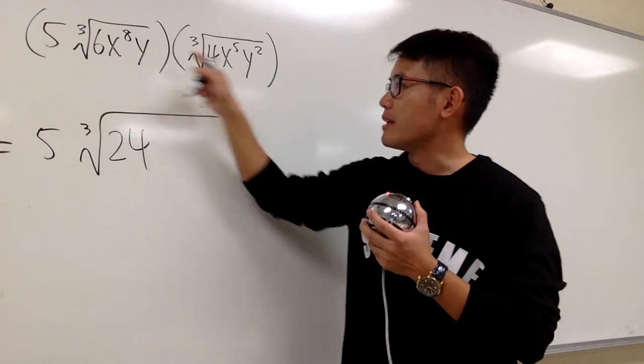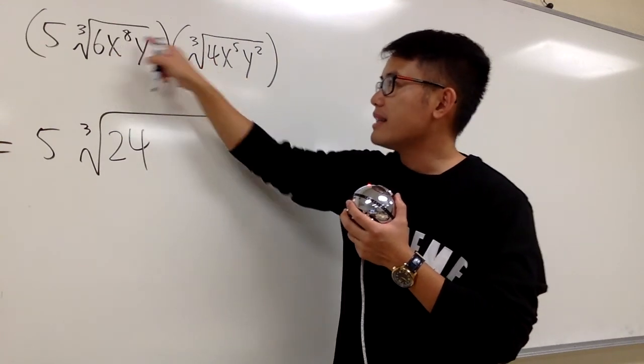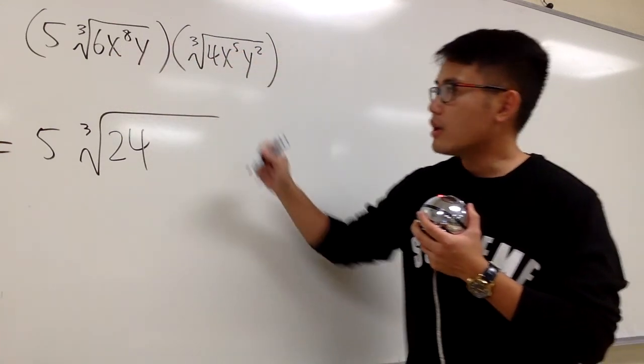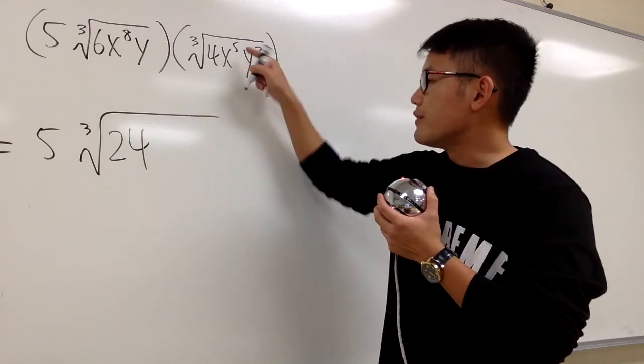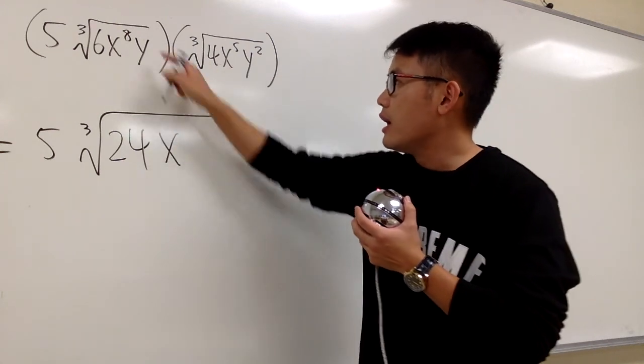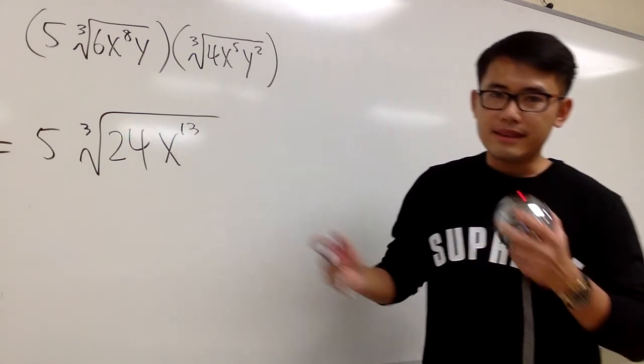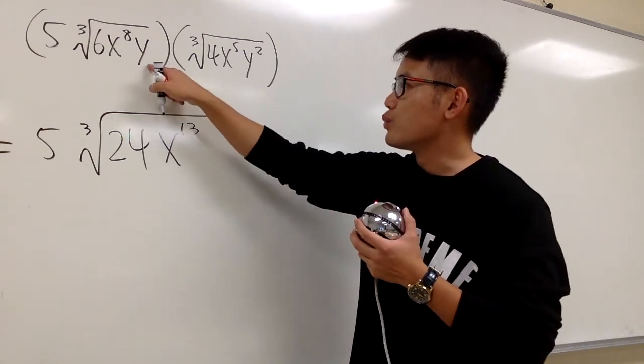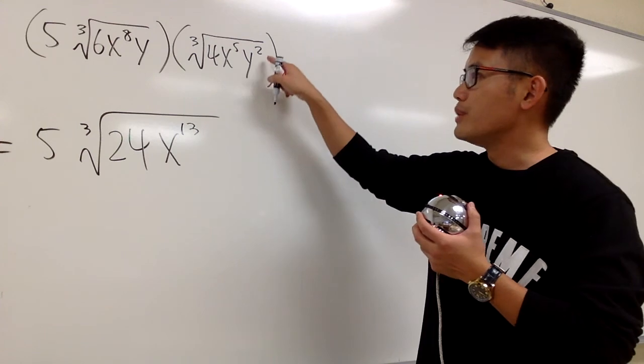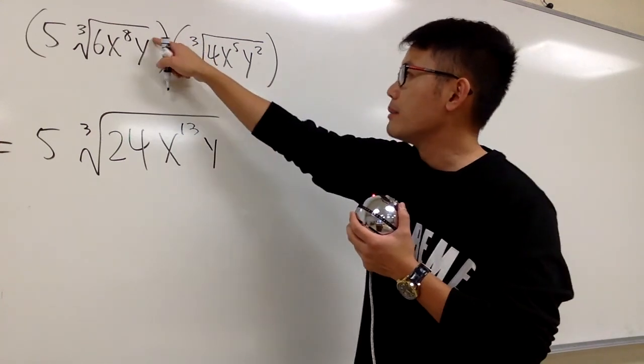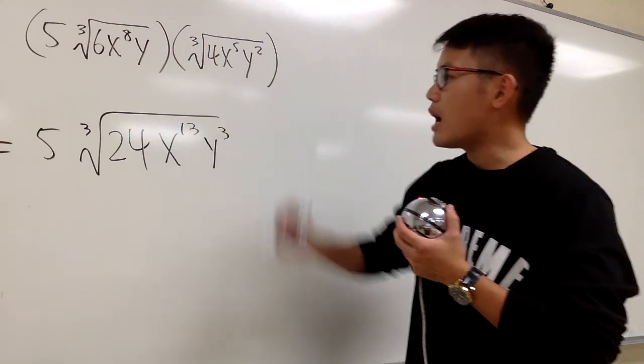We have x to the 8th power times x to the 5th power. When we multiply and they have the same base, we are going to add the exponents. So x to the 8th times x to the 5th is going to be x to the 13th. And then for the y, this is y to the 1st and this is y to the 2nd. We are going to get y to the 3rd power.